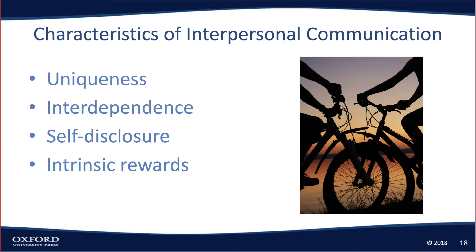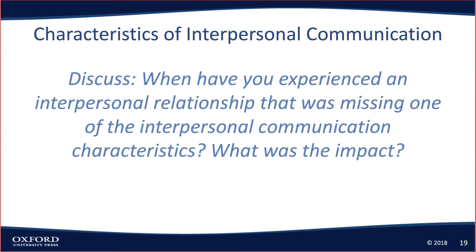If you did a one-to-four scale, you would see that relationships change — with some people the interdependence is higher than the self-disclosure, or the intrinsic rewards is a little higher. You can have different kinds of interpersonal relationships. With one being 'not at all' and four being 'very much,' you don't have to have fours all across the board. Do you have an interpersonal relationship where you're missing one of those four?